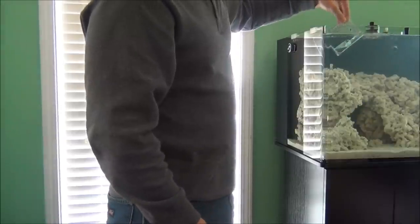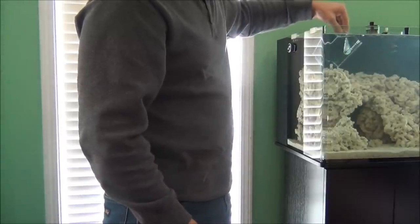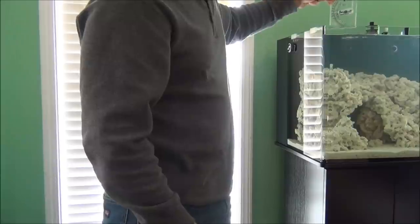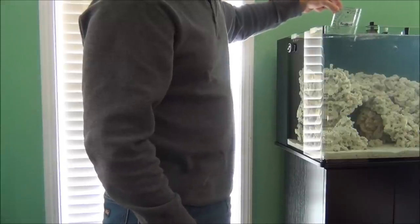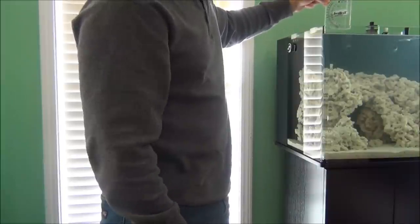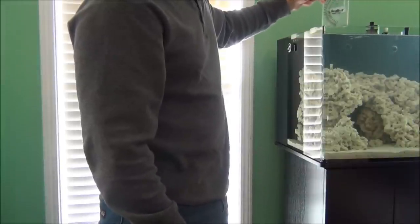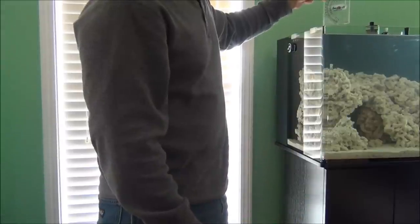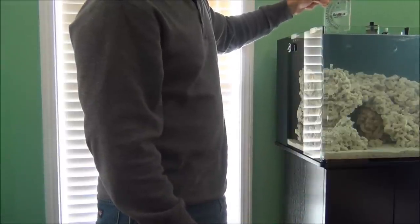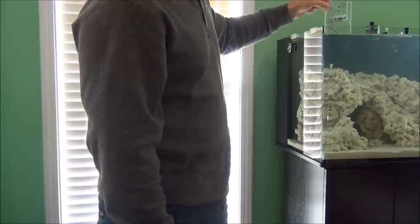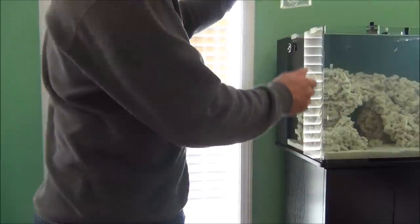Now, back in the day, I kept my specific gravity at 1.024 to allow for error. But today with technology that we have, with auto top off units and refractometers, I recommend keeping your aquarium as close to natural seawater as possible. And that is 1.026 specific gravity or a salinity of 35.